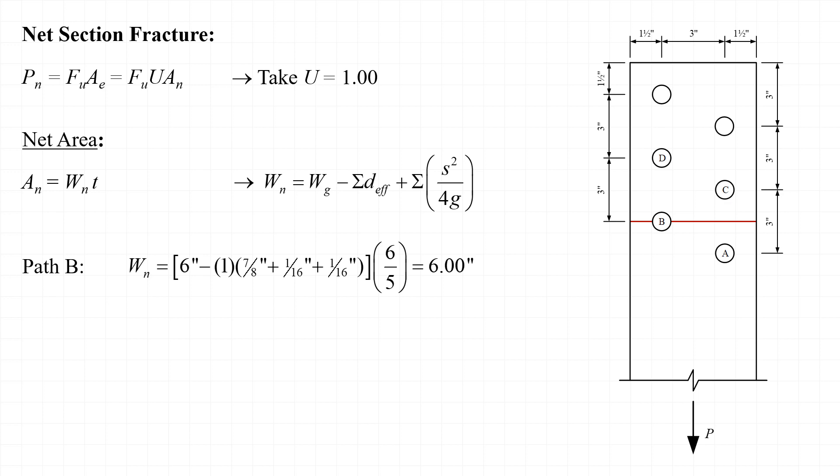To be complete, we should also evaluate a fracture path that passes through bolt hole B alone. In that case, the net width is 6 inches minus one bolt hole — diameter of 7/8 plus 1/16 inch, plus a second 1/16 inch for fabrication damage — multiplied by a modification factor of 6/5, because there are six bolts total and five are on or behind the fracture path being considered.